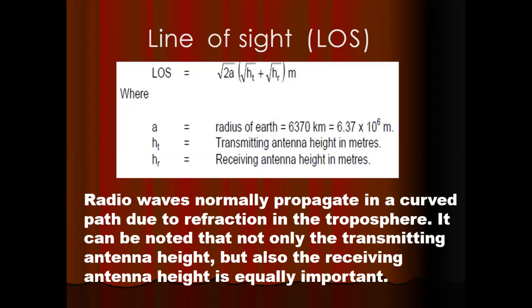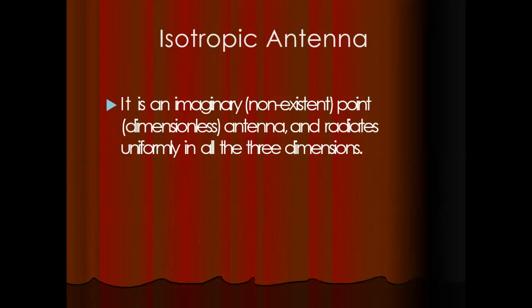Radio waves normally propagate in a curved path due to refraction in the troposphere. It can be noted that not only the transmitting antenna height but also the receiving antenna height is equally important. The transmitting antenna and receiving antenna heights must be equal — only then will the line-of-sight condition be satisfied. The isotropic antenna is a basic reference antenna that always radiates power equally in all directions.